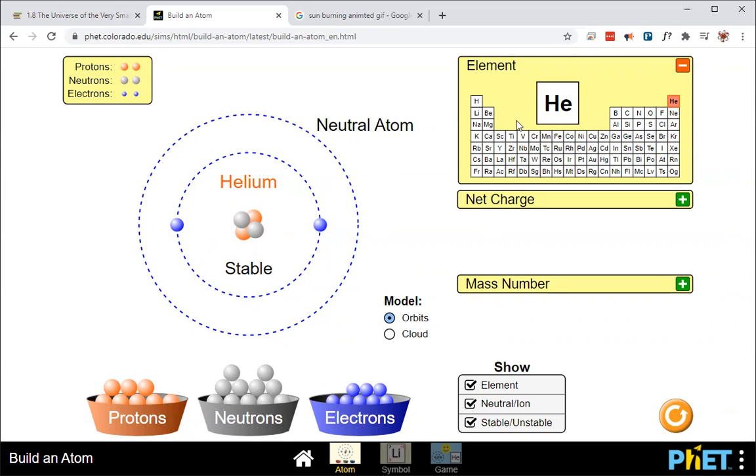I'll do one more for you. I'll do lithium, and then I'll let you do carbon on your own. So to make lithium, I need to add three protons. You can see that the number of protons determines what element it is.